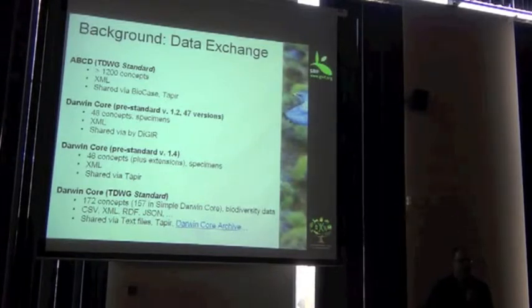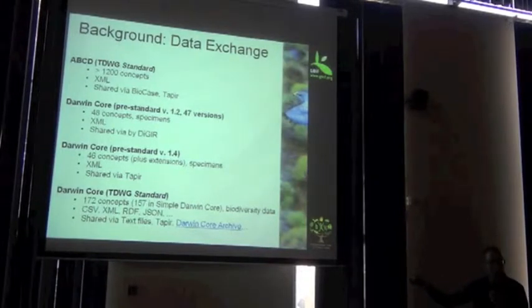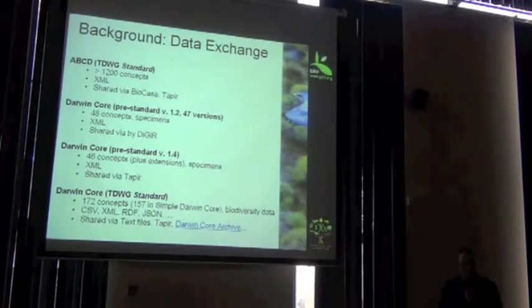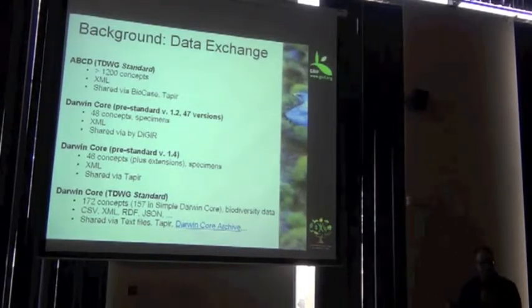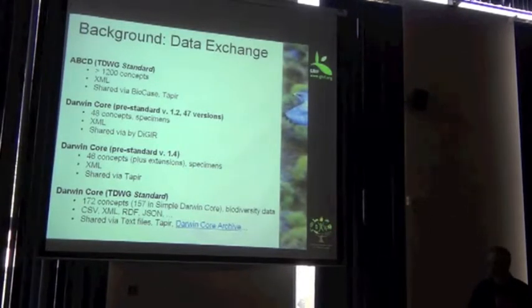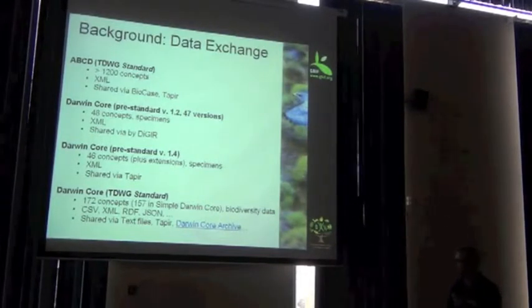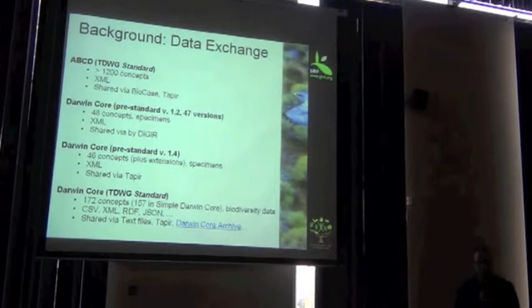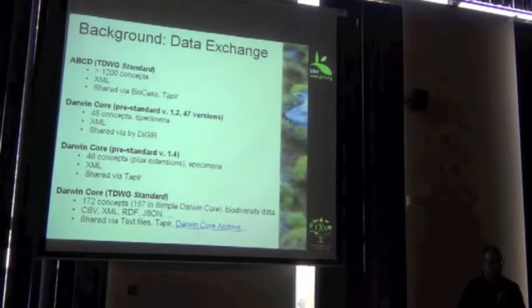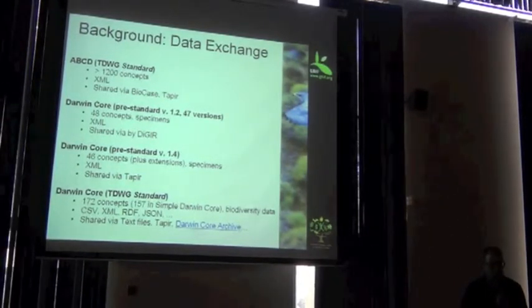The good thing about Darwin Core is there's a smaller number of terms. You can see 172, that's how many it contains today. 157 in just a simple Darwin Core. And this is exchanged in simple text files, CSV, tab delimited formats. And the way that this is most often shared is something called the Darwin Core Archive. Let me get into what that is exactly.